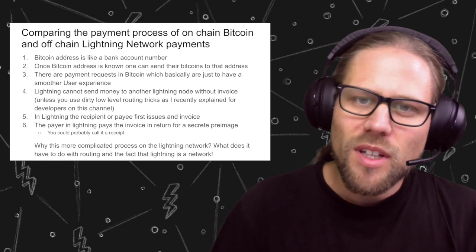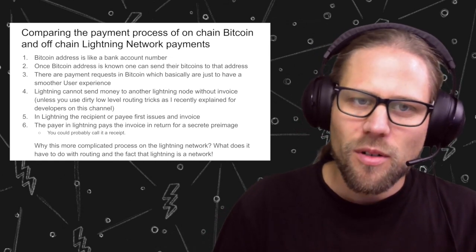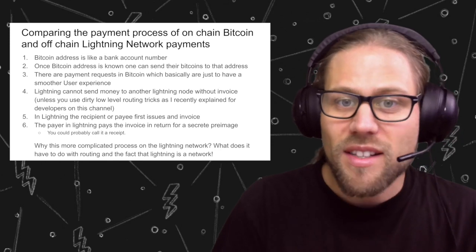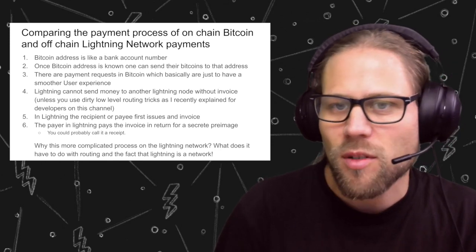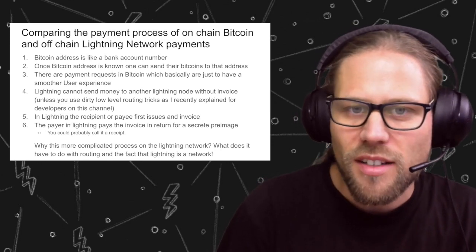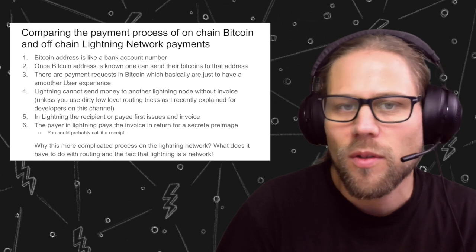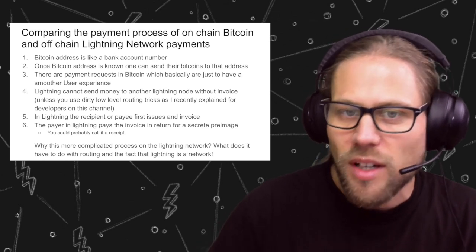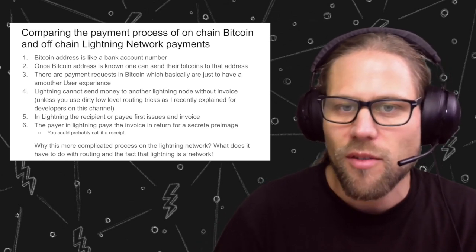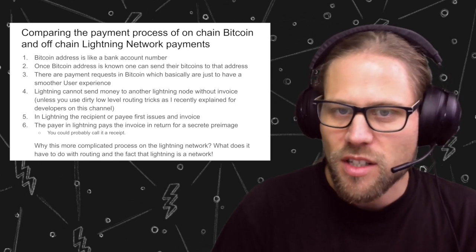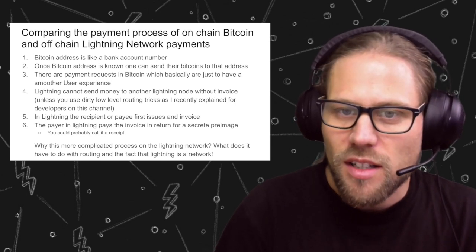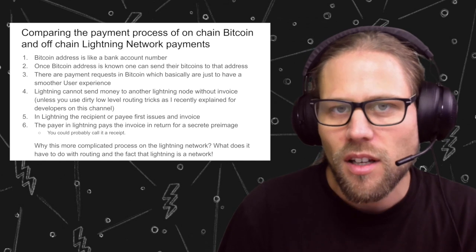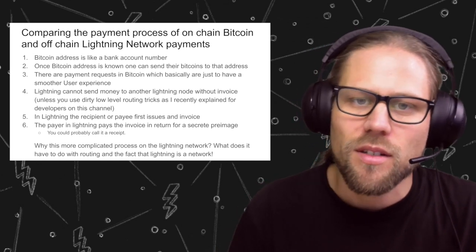In the remainder of this video, I want to discuss why the process in the Lightning Network is like this. Why is it different from Bitcoin? Why does it have to be so complicated? Why is there this additional step of negotiating an invoice? Why can't I just send money somewhere and have everything work? By answering this, we will understand what HTLCs — hash time-locked contracts — are.